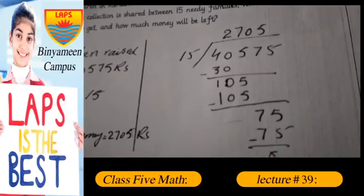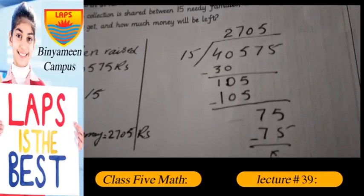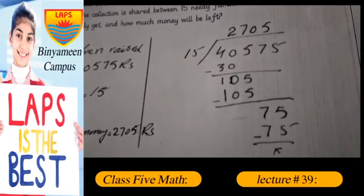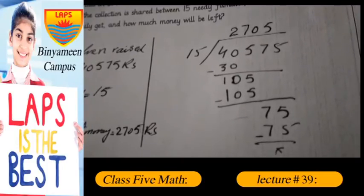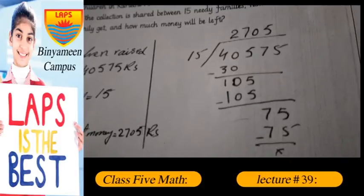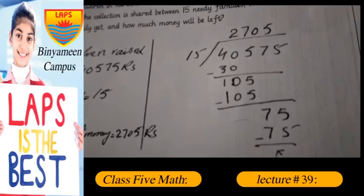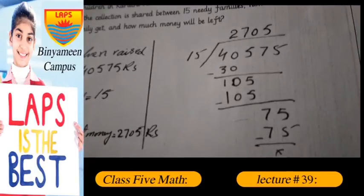40,575 divided by 15. 15 multiplied by 2 gets 30, subtract, place 10. 10 is smaller than 15, therefore place 5, it becomes 105. 15 multiplied by 7 gets 105, now subtract.